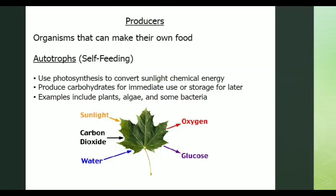Producers are organisms that can make their own food. Using sunlight, glucose, and photosynthesis, they produce energy. They convert sunlight into chemical energy using chlorophyll.